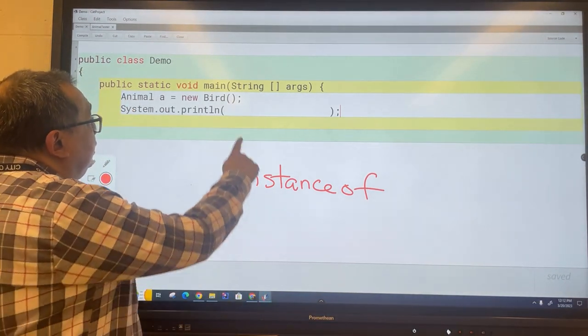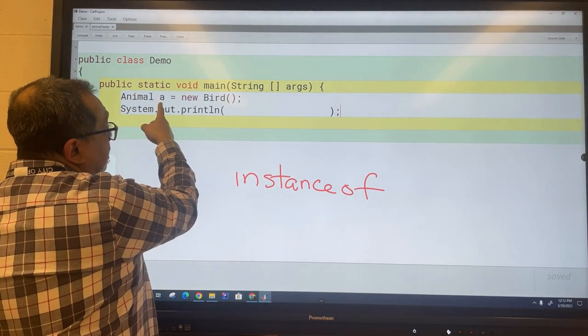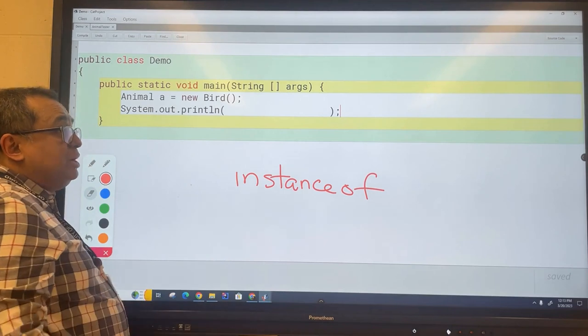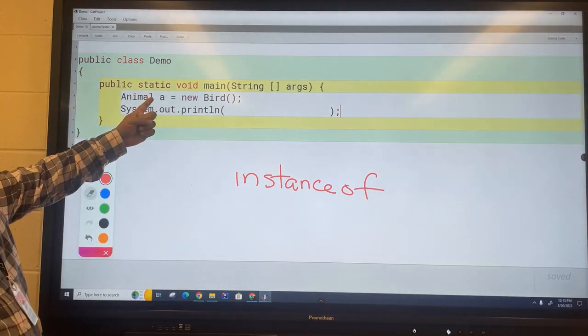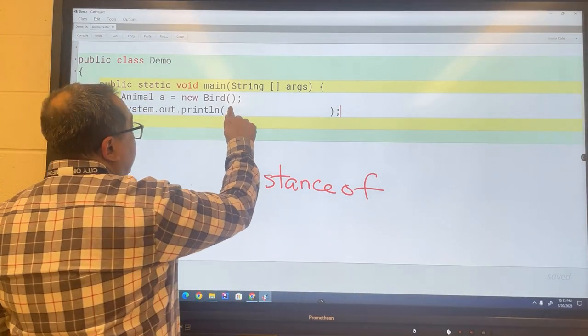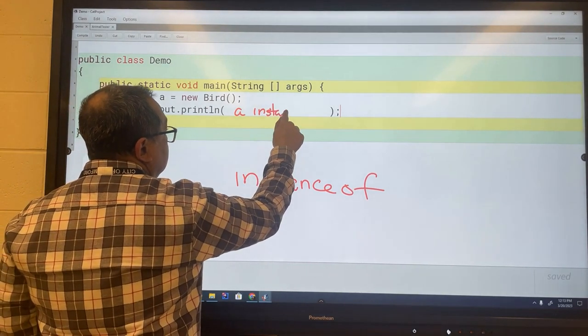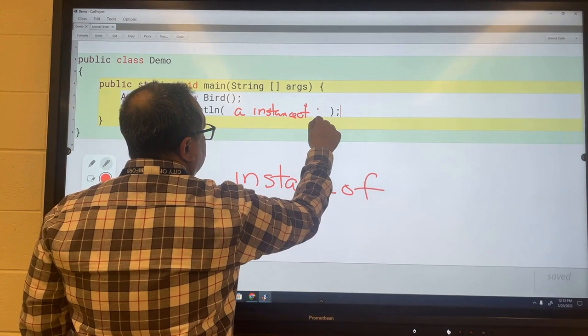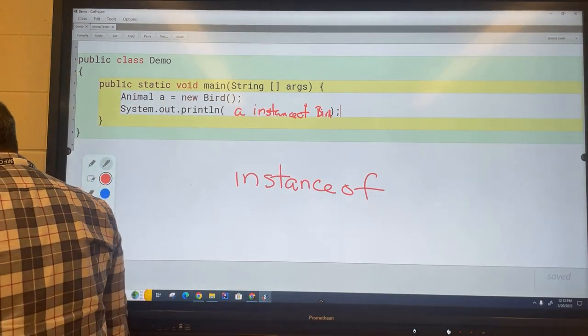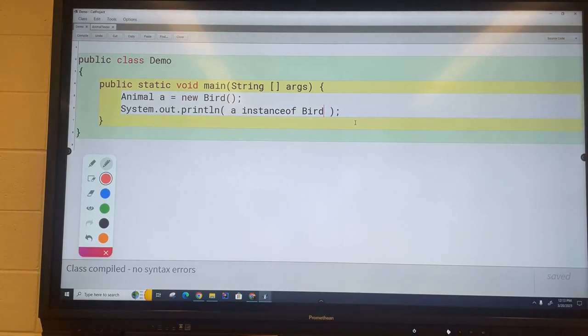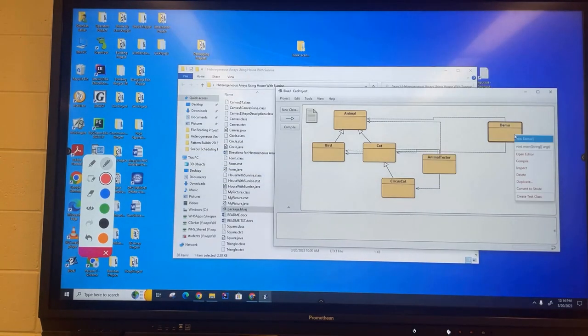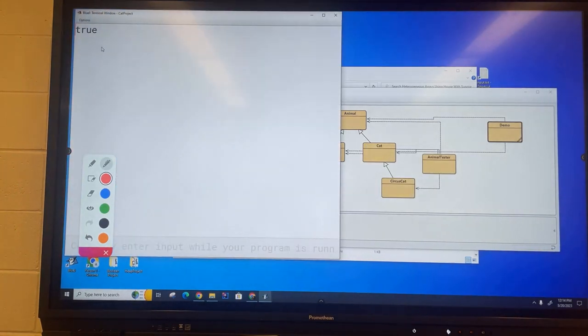So what we're going to do over here is we're going to ask the question is a pointing to a bird? So my first question is: is a an object? Yes it's a pointer but is it also an object? It is. So we're going to go a instanceof bird. So let's try that. You can see that this compiles and now I'm a little surprised that this is not showing up in a different color. I'm not sure what that's about but in any case let's run it. And you can see that it's true.